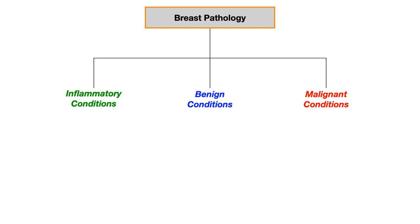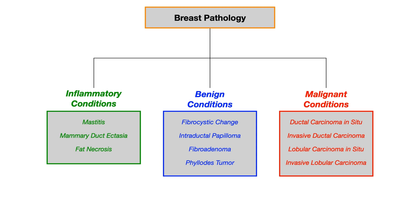When it comes to breast pathology, you want to separate it into one of three different categories: inflammatory conditions, benign conditions, and malignant conditions. In the inflammatory conditions, we're going to talk about mastitis, mammary duct ectasia, and fat necrosis of the breast. For benign conditions, we're going to talk about fibrocystic changes, intraductal papillomas, fibroadenomas, and the phyllodes tumor. And for the malignant conditions, we'll talk about ductal carcinoma in situ, invasive ductal carcinoma, lobular carcinoma in situ, and invasive lobular carcinoma.